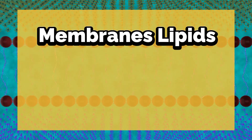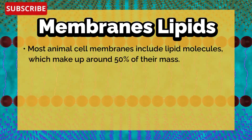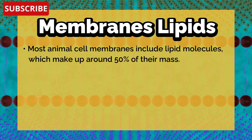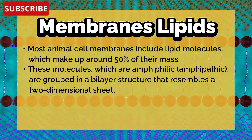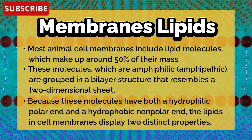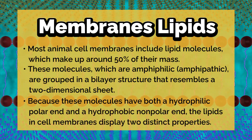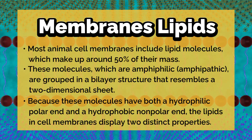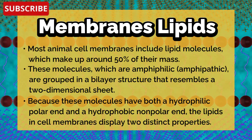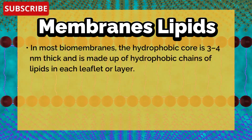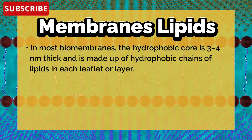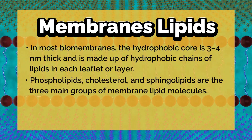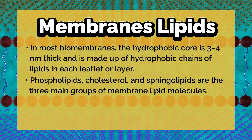First, let's dive into the introduction of membrane lipids. Most animal cell membranes include lipid molecules which make up around 50 percent of their mass. These molecules, which are amphiphilic, are grouped in a bilayer structure that resembles a two-dimensional sheet, because they have both a hydrophilic polar end and a hydrophobic non-polar end. In most biomembranes, the hydrophobic core is three to four nanometers thick.